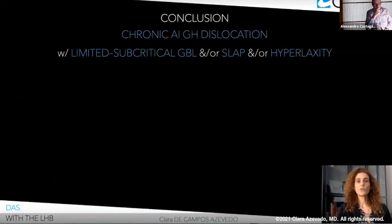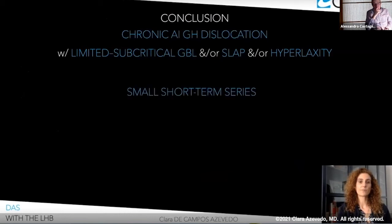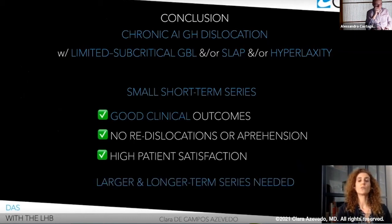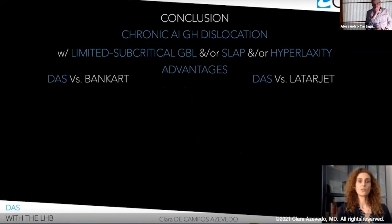In conclusion, when do we use DASH? It is used in chronic anterior inferior glenoid remote dislocations in patients with limited or subcritical glenoid bone loss, and/or a SLAP lesion, and/or in hyperlax patients. We have a small short-term series, but clinical outcomes are very good. We have no re-dislocations or apprehension in our patients, with very high patient satisfaction, though we do need larger and longer-term series to establish these conclusions.